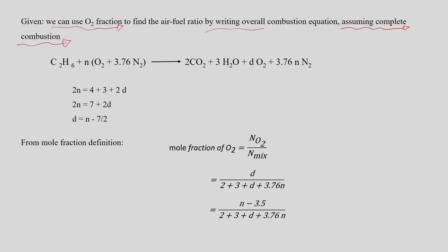From the given data, we use the O2 fraction to find the air-to-fuel ratio by writing the overall combustion equation for C2H6, assuming complete combustion. C2H6 reacts with N moles of air (O2 + 3.76N2) to produce CO2 and H2O as products of the combustion process.